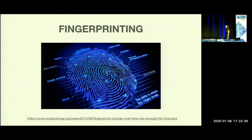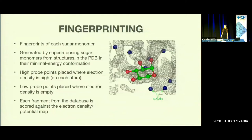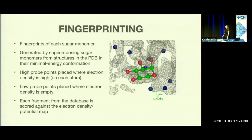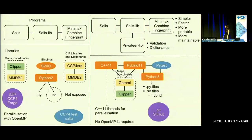The fingerprinting in CELS is similar to human fingerprinting, where a fingerprint has ridges and empty spaces, as you can see here. In the same way, sugar fingerprints have places of high electron density and places of no electron density. Much like we can have a database of human fingerprints, we can also have a database of sugar fingerprints, and this is what CELS uses. The fingerprint database contains one fingerprint for each sugar, generated by superimposing sugars in their minimum energy conformation. High probe points are placed on each atom where the electron density is high, and low probe points are placed in the voids where electron density is empty. Each of these fingerprints is scored against the map, and the one with the highest score is selected and placed in the map.